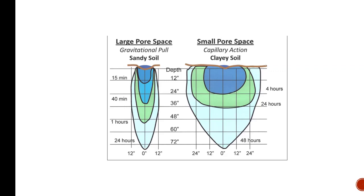When talking about water movement in soil — and I'll discuss this more down the road — gravitational pull has a lot to do with how quickly water moves through the soil, and that's much greater in sandy soil than in clay soil. Capillary action is when water actually moves against gravity and moves back up. After 24 hours, you can see the green ring — that's 36 inches in clay soil and 40 minutes for sandy soil — showing how dramatically soil type affects how quickly water moves through.